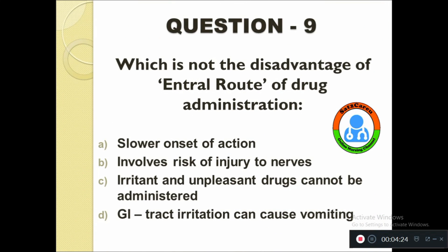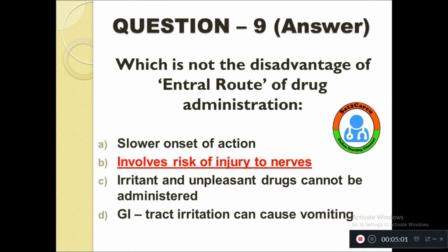Question number nine: Which is not a disadvantage of the enteral route of drug administration? Option A: Slower onset of action, B: Involves risk of injury to nose, C: Irritant and unpleasant drugs cannot be administered, D: GI tract irritation can cause vomiting. The correct answer is: involves risk of injury to nose.